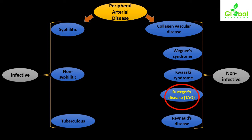Within the setting of peripheral arterial disease, conditions can be divided into infective and non-infective categories. Infective conditions include syphilitic, non-syphilitic, and tuberculous conditions. Non-infective conditions include collagen vascular diseases, Wagner's syndrome, Kawasaki syndrome, Buerger's disease, and Raynaud's disease. TAO or Buerger's disease falls under non-infective peripheral arterial disease.